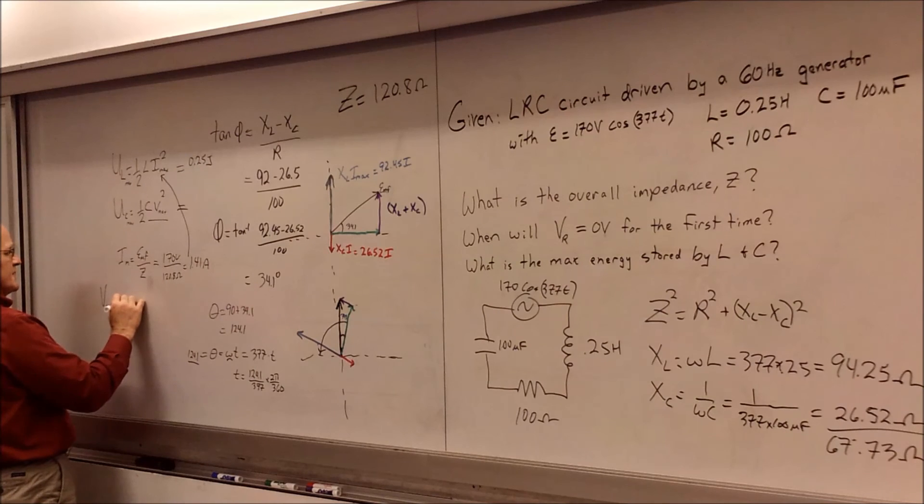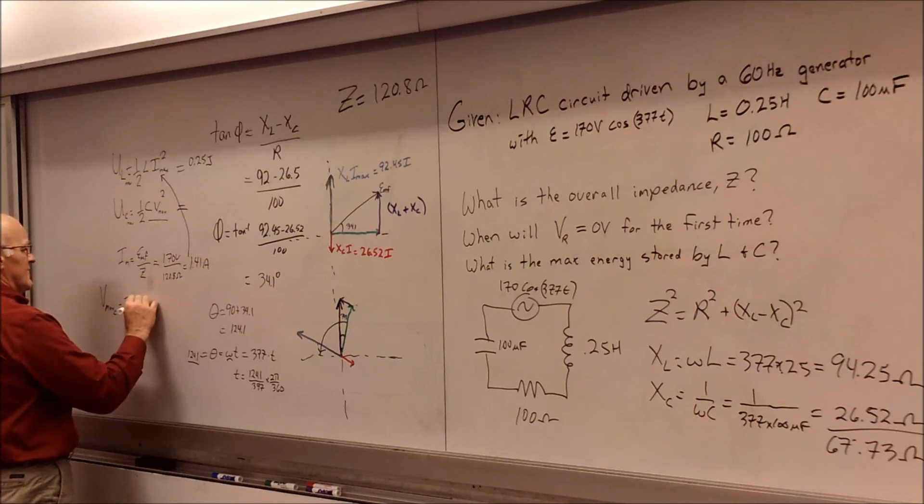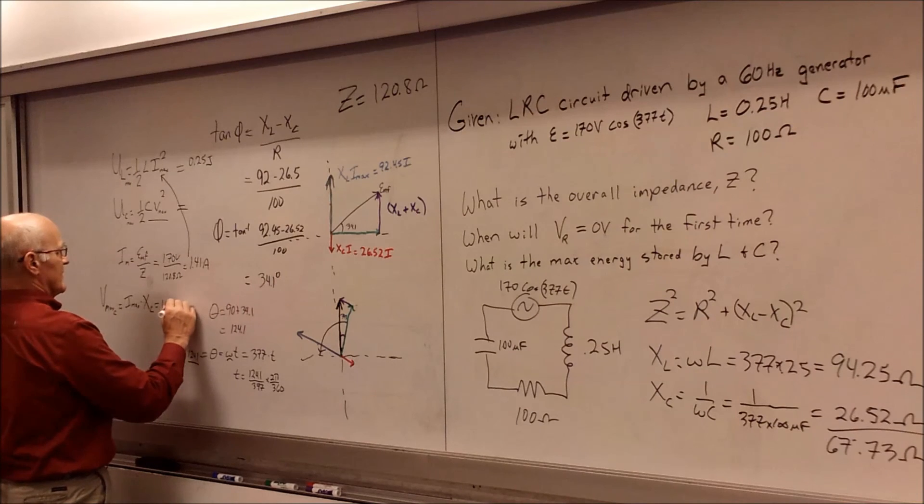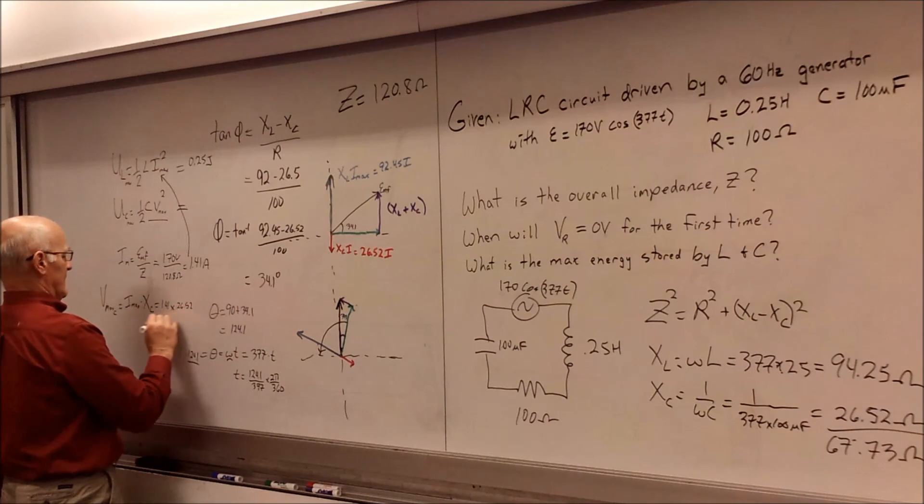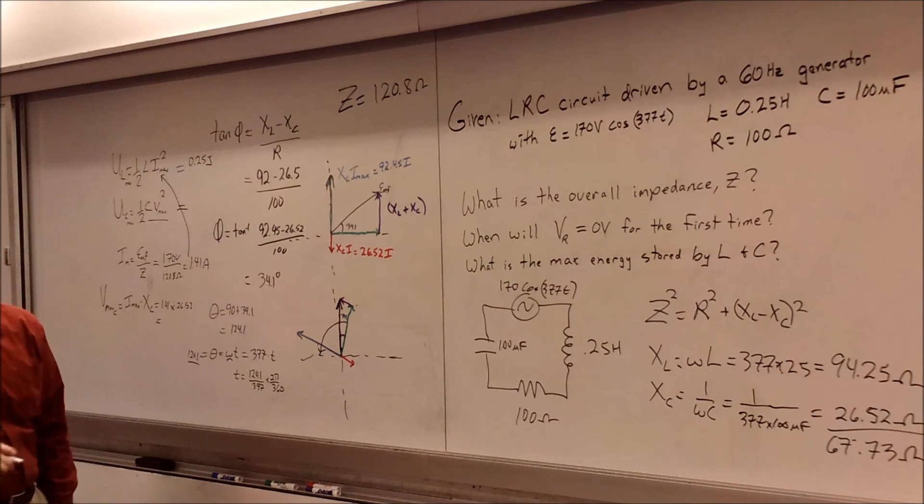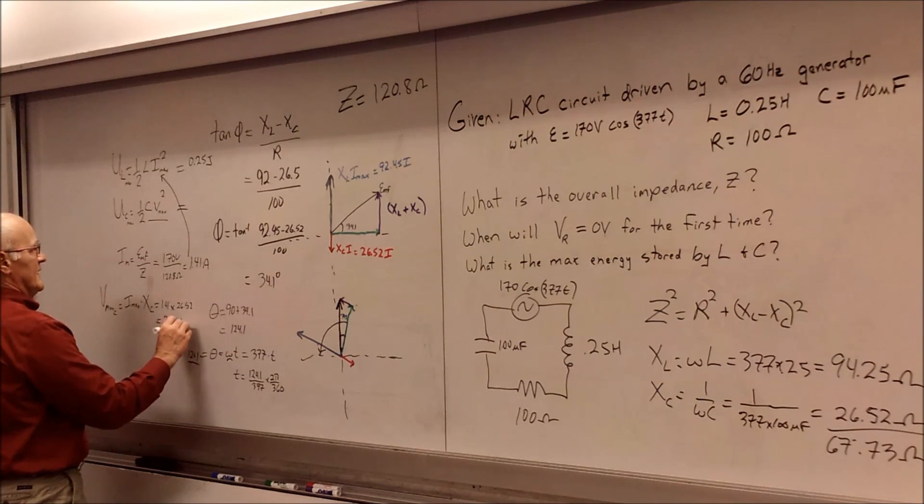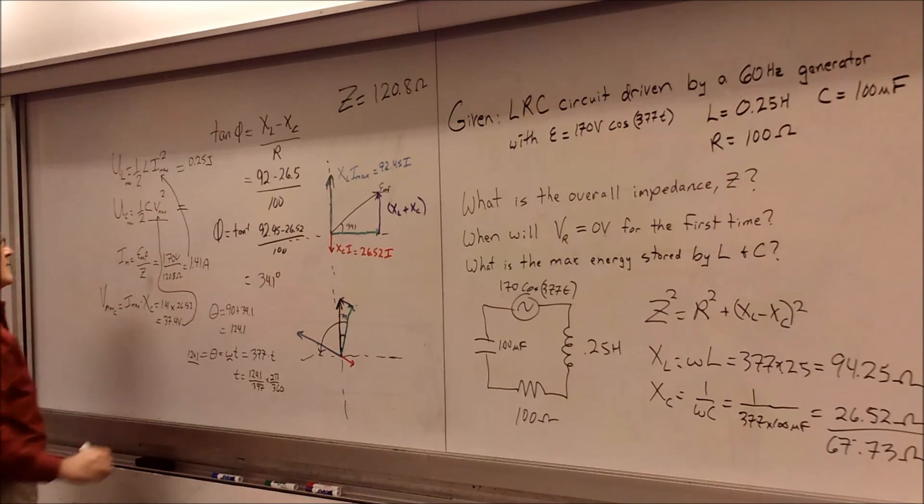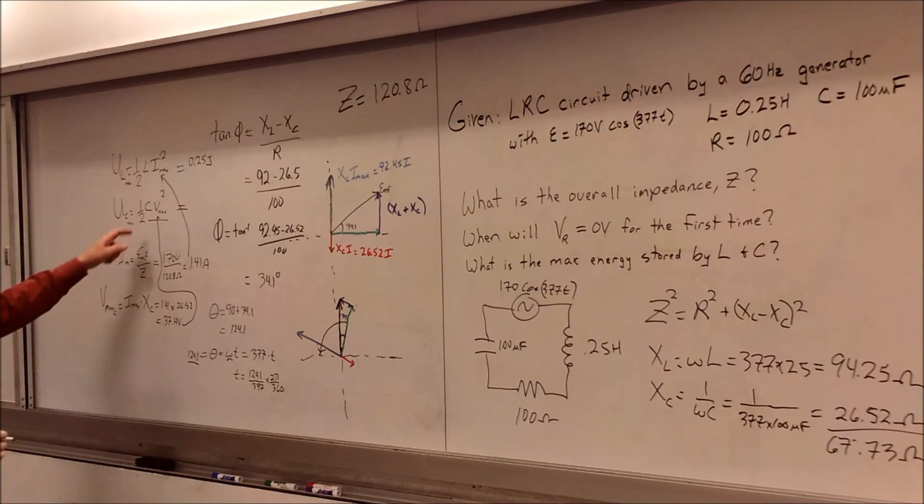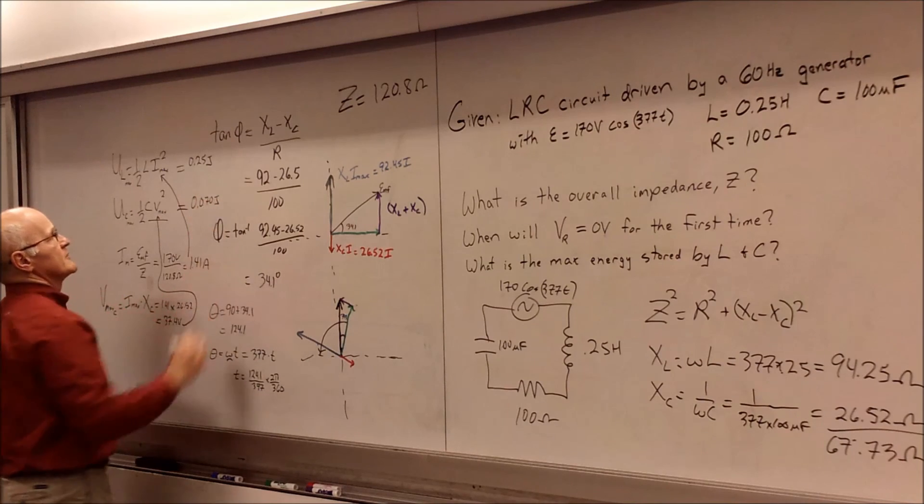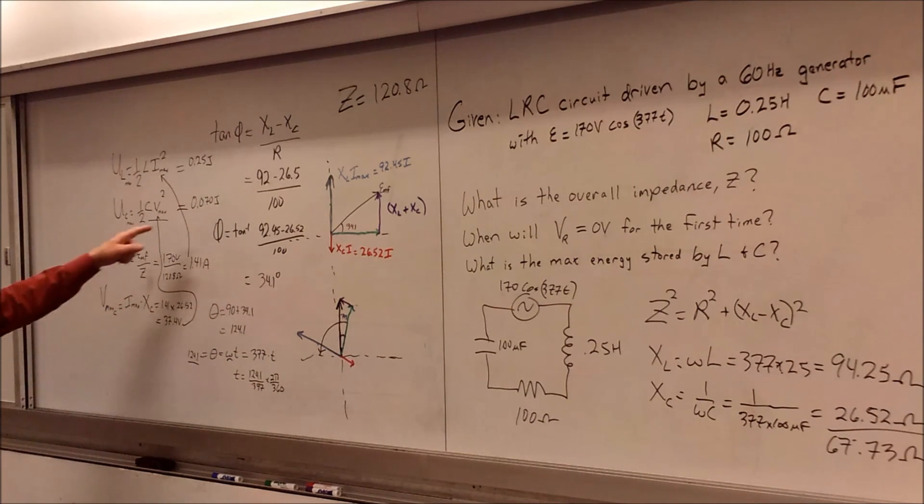And so what is the Vmax for the capacitor? Vmax is going to be the Imax again, times our XC. And so we end up doing 1.41 times our value for XC, which is 26.52. And when we go ahead and solve for that, we get our value of 37.4 volts. So we take that, plug that into our Vmax value, making sure to square that, and then multiplying it by 100 microfarads. And then we end up getting a 0.070 amount of joules for the capacitor's stored energy.